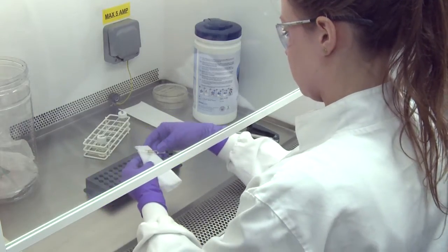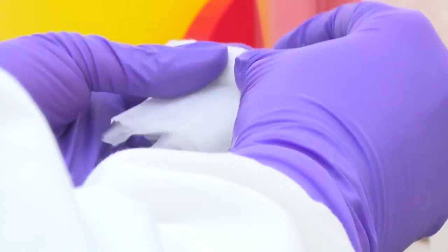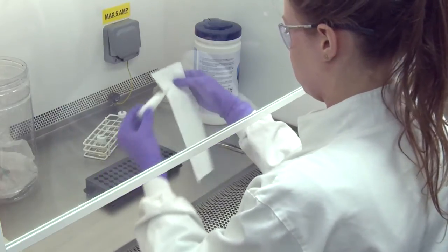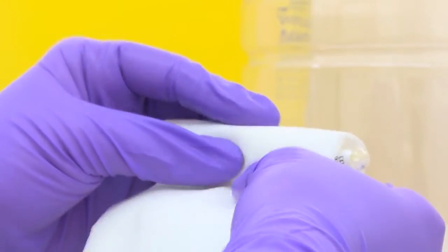Wrap the ampoule in a disinfectant wipe or tissue soaked in 70% alcohol. Then wrap some paper towel around the outside of this to secure a protection layer to prevent penetration of glass when the ampoule is snapped.